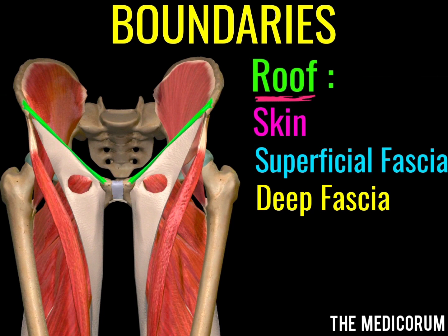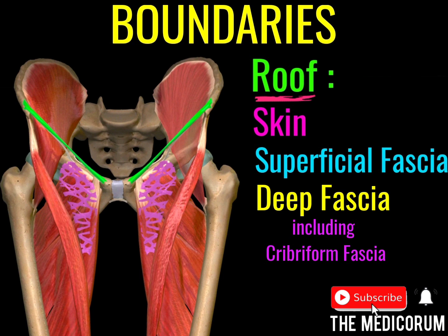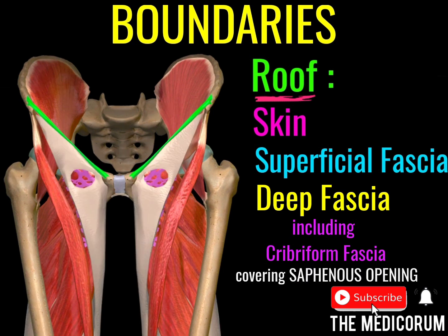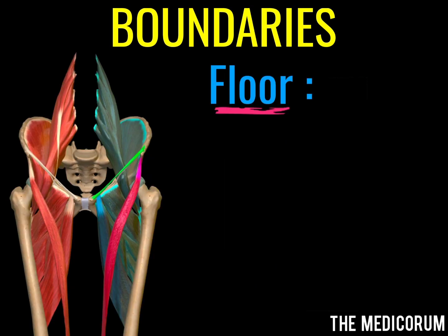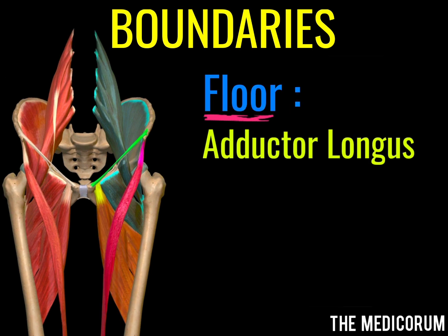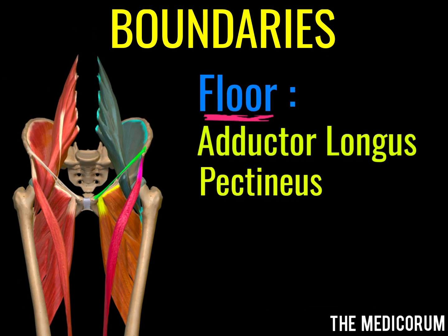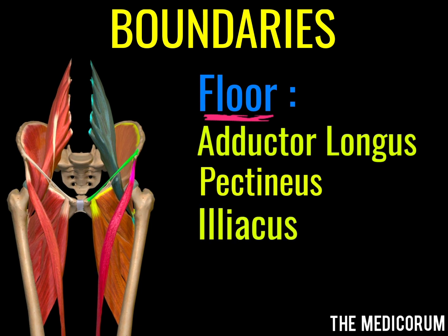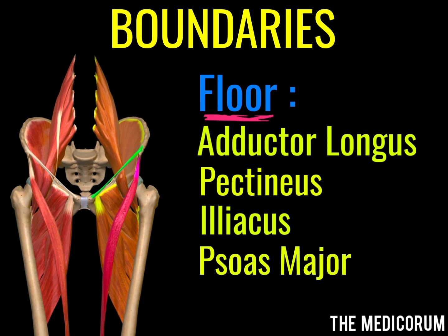After the superficial fascia, we find the deep fascia. Inside the deep fascia, we have the cribriform fascia. The floor of the femoral triangle is formed by muscles, and from medial to lateral they are: adductor longus, pectineus, iliacus, and psoas major.